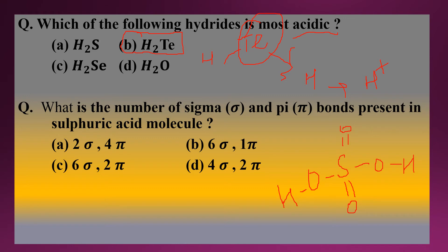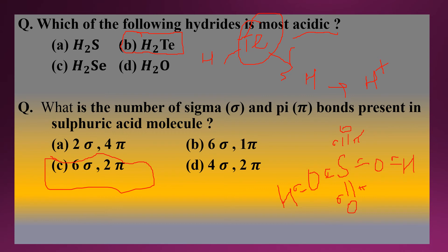To calculate the sigma and pi bonds in sulfuric acid: the four single bonds are all sigma bonds. Each double bond contains one sigma bond plus one pi bond, so the two double bonds contribute two more sigma bonds. The total number of sigma bonds is six and the total number of pi bonds is two. So option C is the correct answer — six sigma bonds and two pi bonds are present in the sulfuric acid molecule.